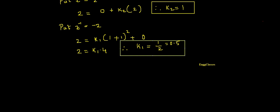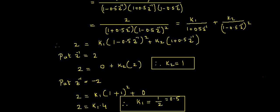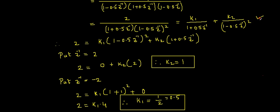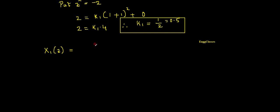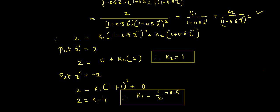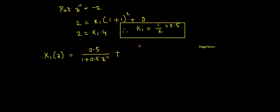Substituting K1 equals 0.5 and K2 equals 1 into the partial fraction expression, X(z) equals 0.5 divided by (1 plus 0.5 z⁻¹) plus 1 divided by (1 minus 0.5 z⁻¹) squared. This is the expression for X(z) from which we will take the inverse Z-transform to recover x(n).